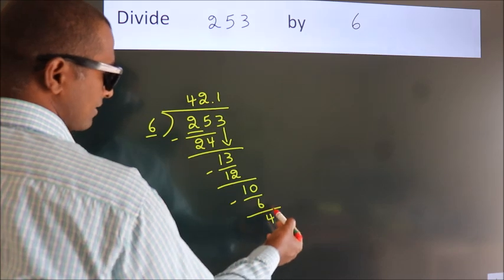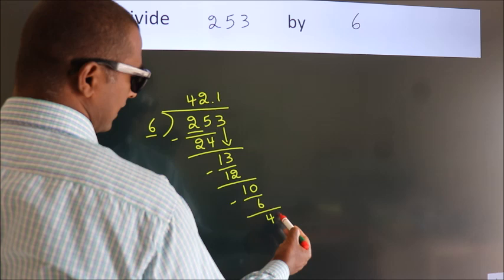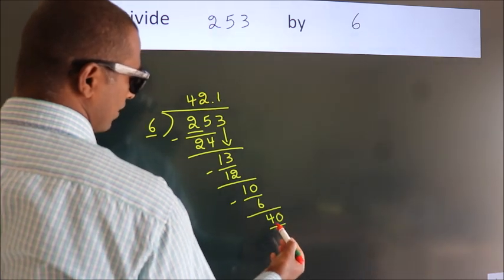After this, we already have the decimal point. So, we directly take 0. So, 40.